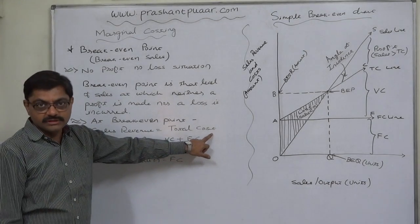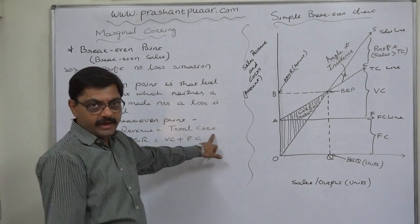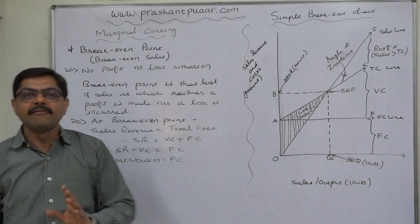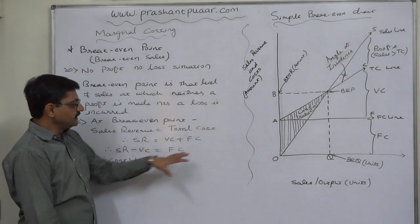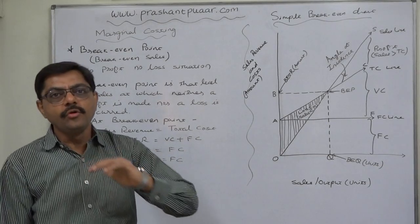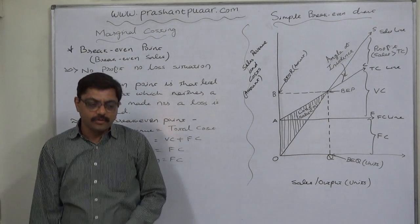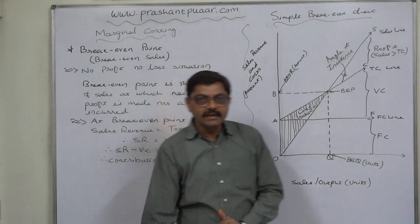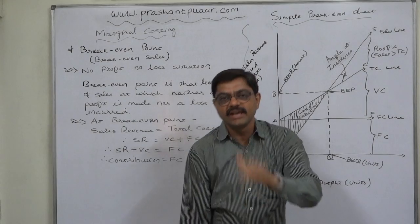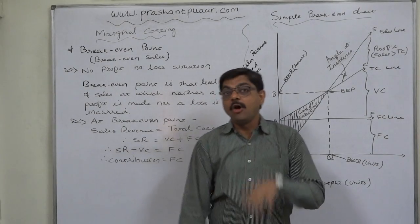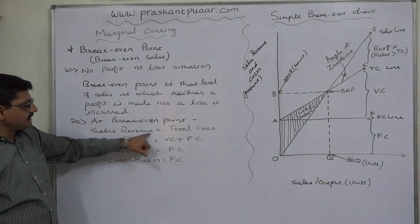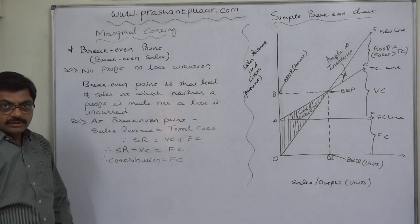This no profit, no loss situation happens when the sales revenue is exactly equal to our total cost — that is called the break-even point. In the books of accounts we can never see the break-even situation; this is an ideal situation which we should know at the inception of the budgetary or planning period, so that we are aware of how much sales should we make to reach break-even and save ourselves from loss.